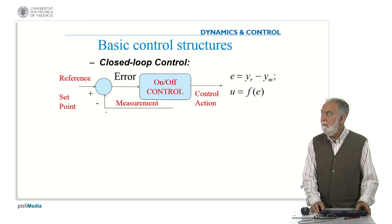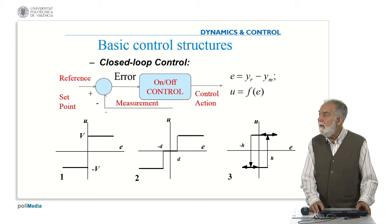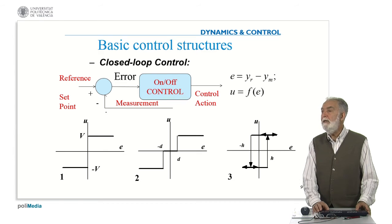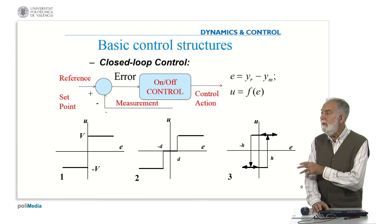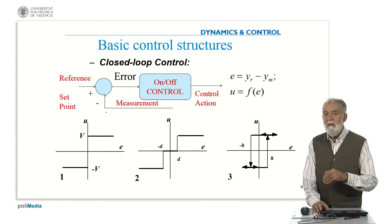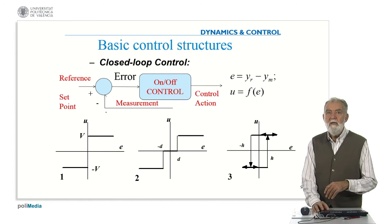We may have very simple closed loop control — what is called on-off control. In that case, the control action is a function of the error, but this function is simply two values: V or minus V. We may have some small errors which are not active, or we may also have the problem of hysteresis when the output depends on the way the error is changing. It is very simple — for instance, the control of the temperature in a room: we have a thermostat which senses the temperature, and if the temperature is below some threshold the heating is connected, and if above this threshold the heating is disconnected. So it's very simple on-off control, but of course not very precise.